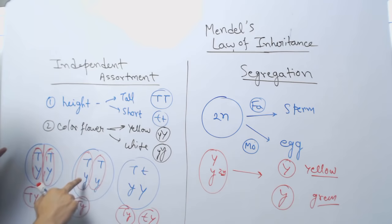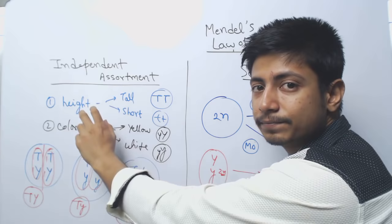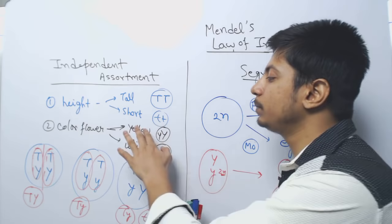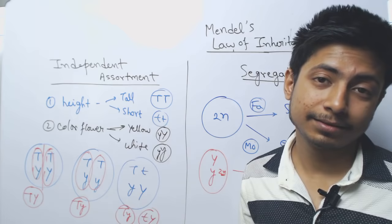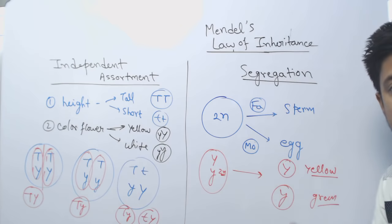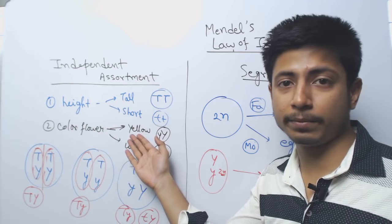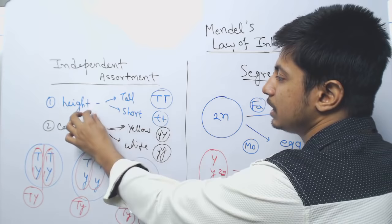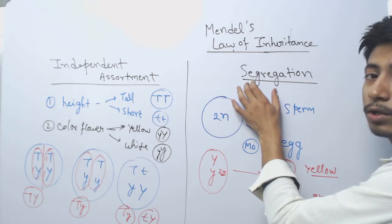For example, the height of the plant will not influence the color of the plant. If the plant is taller, it is not always going to be yellow — nothing like that. Whether the flower is yellow or white is a separate coin flip. Whether the plant is tall or short is a separate and independent coin flip. Tall does not necessarily mean yellow, and yellow does not necessarily mean short. Both traits cannot be combined — these two traits will not interact. Each trait behaves according to the law of segregation independently.